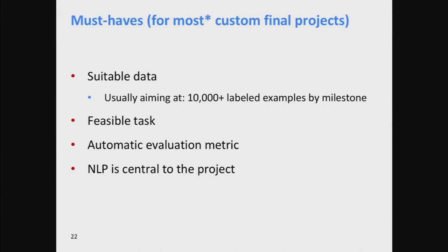Different projects are different, but often for a lot of projects the things you need to make sure of are: you can get a decent amount of data to train a model, it's a feasible task that's not so enormous you can't do it in four weeks, and you'll want to have some evaluation metric. For deep learning you need an automatic evaluation metric — unless there's code you can run that gives you a score for how well you're doing, you can't do the deep learning trick of using back-propagation to optimize your scores. We also require that there's an important part of NLP in your class project — it doesn't have to be the only thing, you could do reinforcement learning or images to captions, but there has to be NLP in it.